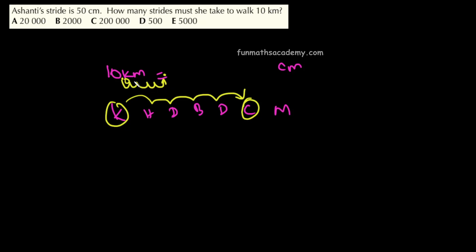Empty places are filled with zeros. So, 10 followed by how many zeros? 5 zeros. So in total, 1 followed by 6 zeros — that gives us 1,000,000 centimeters.